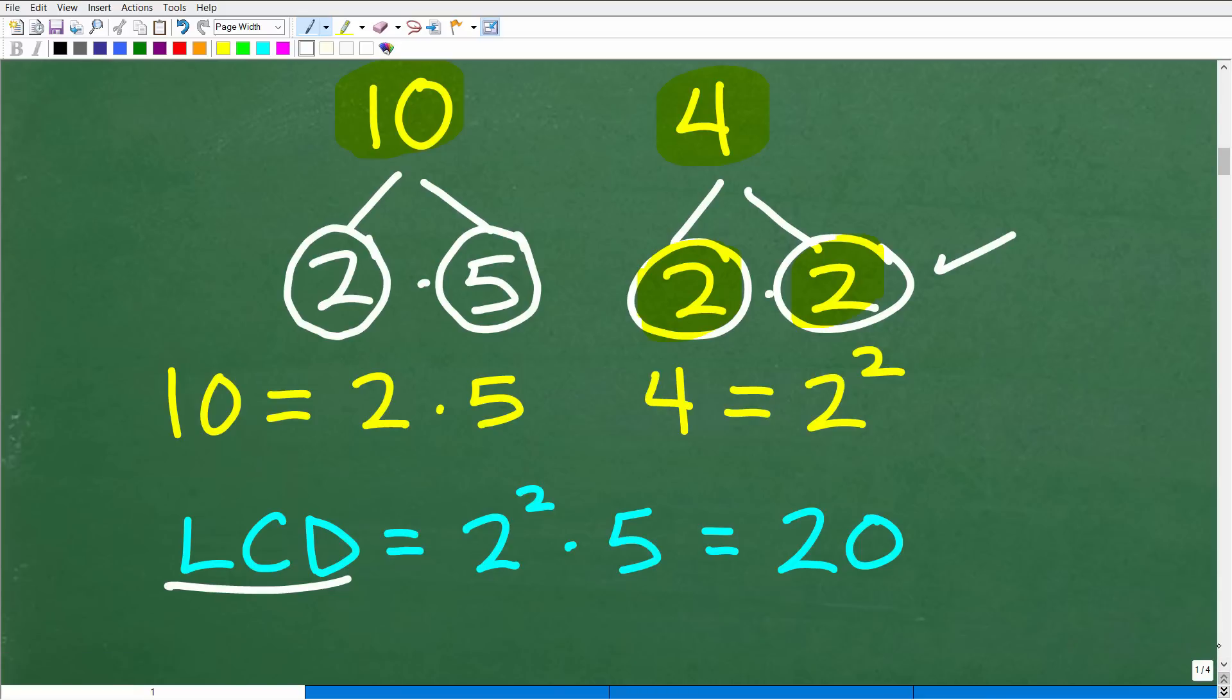Here is how you can construct and find the LCD. Once you have all the prime factors of your numbers, this is super easy. All you need to do is have each one of these prime factors represented in your lowest common denominator. We're going to pull in every single unique prime factor. We have a 2 here, a 5 here, and a 2 squared here.